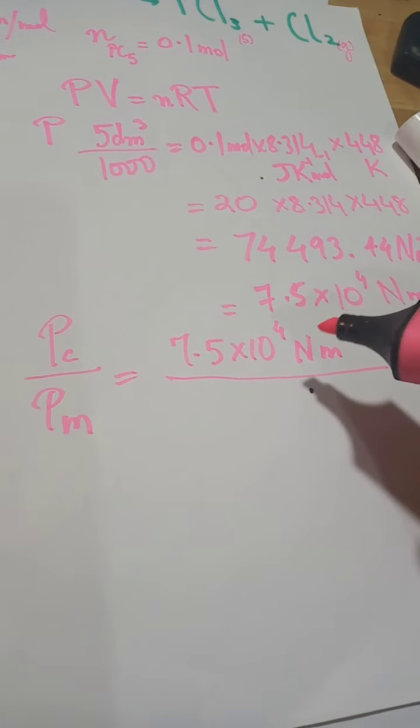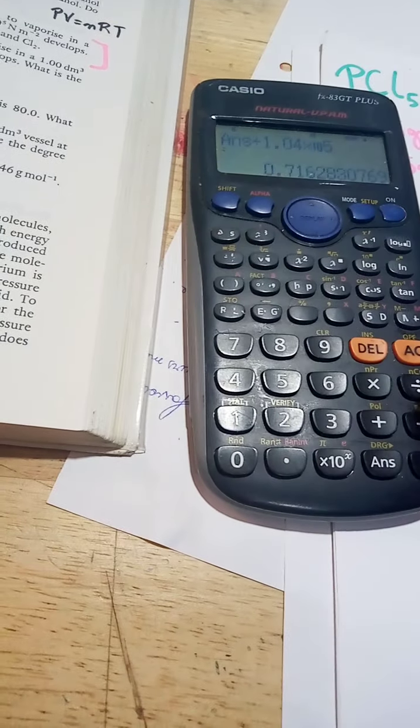So what we'll do is we'll quickly bring everything here, and it'll be 0.1 times 8.314 times 448, that should give you 74,493.44 newtons per metre squared, that will be 7.5 times 10 to the power 4 newtons per metre squared. Yes, we got it, there we go, we've got it.